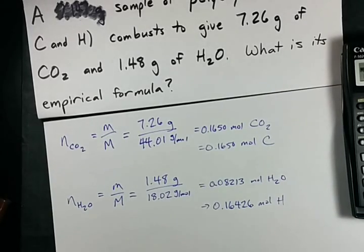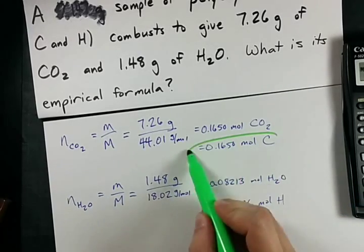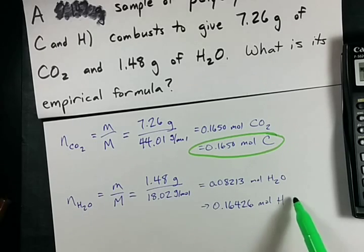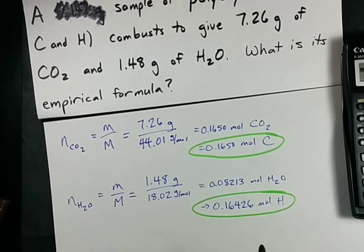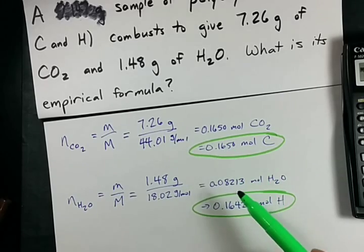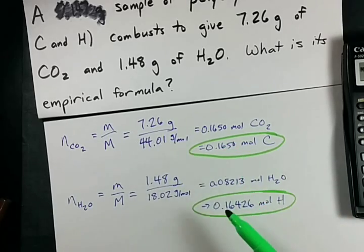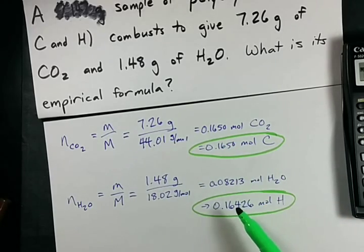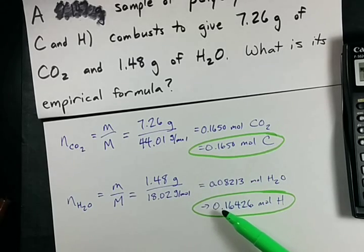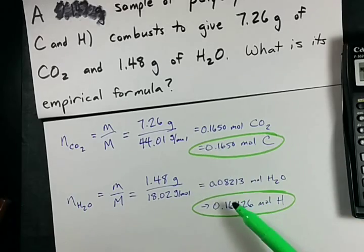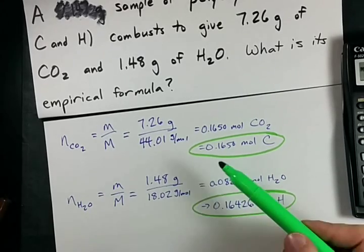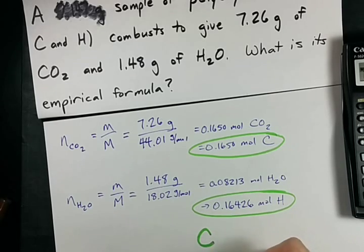You have to double the number of moles of water to get the number of moles of hydrogen. We now know how many moles of carbon were in the original sample, and we know how many moles of hydrogen were in the original sample. By inspection, they're the same. You could find the ratio between them. My ratios are equal, which means my empirical formula is C1H1, or rather one carbon to one hydrogen.